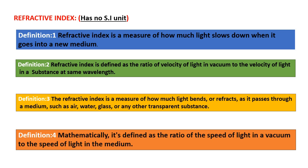Refractive index has four definitions which give the same meaning, and the main point is it has no unit. We are just finding some number — that is how much the light bends or refracts when it travels from one medium to another medium. Refractive index is a measure of how much light slows down when it goes into a new medium. It is defined as the ratio of velocity of light in vacuum to the velocity of light in a substance at the same wavelength, and is a measure of how much light bends as it passes through a medium such as air, water, glass, or any other transparent substance.